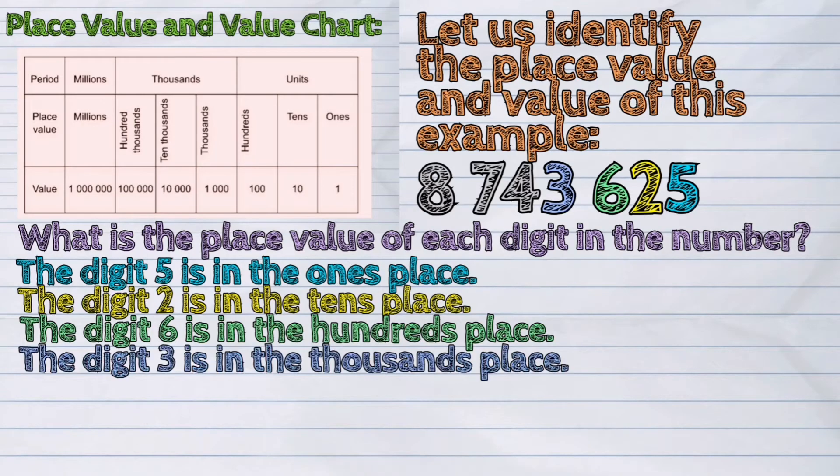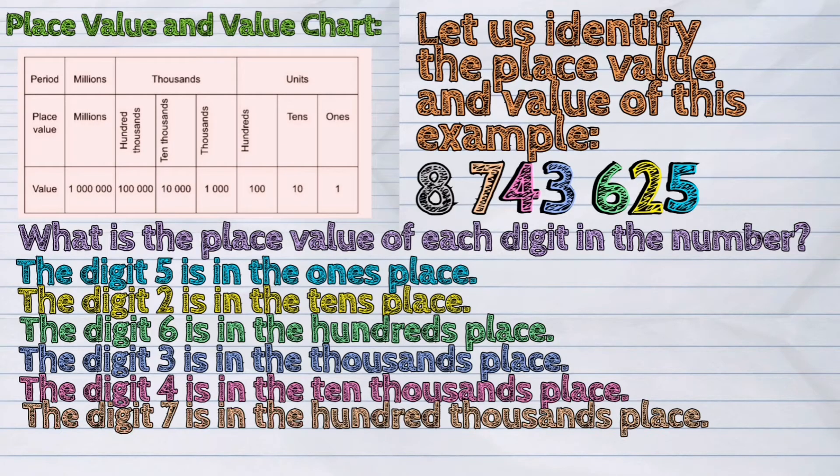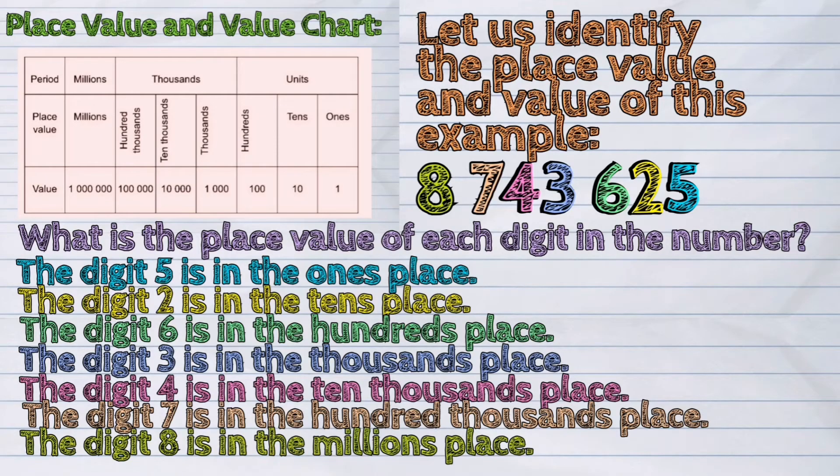The digit three is in the thousands place. The digit four is in the ten thousands place. The digit seven is in the hundred thousands place. And the digit eight is in the millions place.